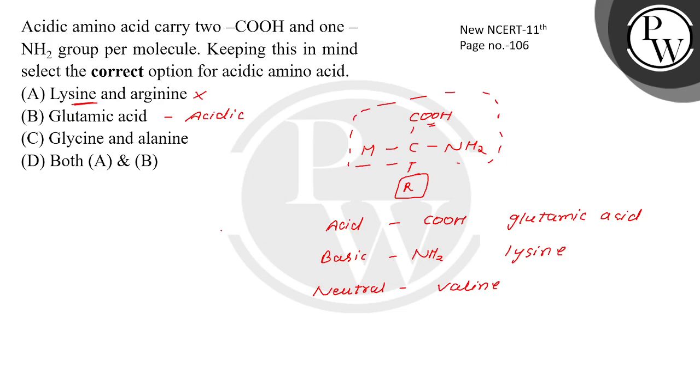In your acidic amino acid, this is incorrect. If we talk about the amino acid glycine, then the R group is a simple H. Methyl is alanine, hydroxyl is serine. So what do you see here? Both A and B are incorrect. The correct option is B.